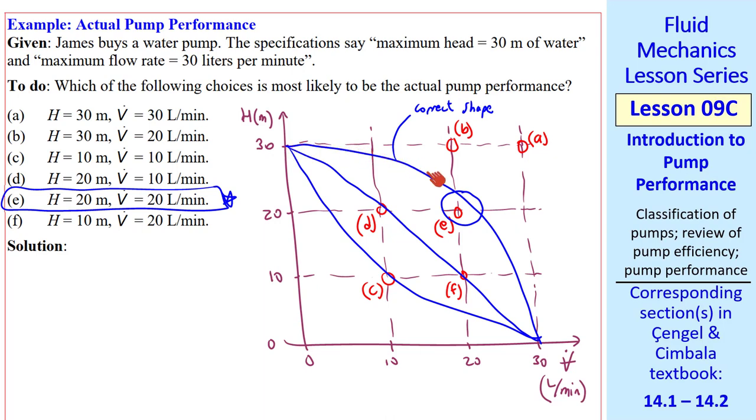In actual operation of a pump, you're along this curve, and point E has H lower than max, and V dot lower than max, but that's closest to the operating curve. In a later lesson, we'll show how to apply the pump performance curve in a pipe system to predict the flow rate at which the pipe system will operate.